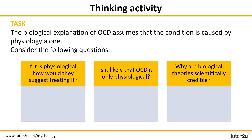So let's put your critical thinking skills to the test. One of the conditions you'll study in psychopathology is OCD, and the biological explanation assumes that the condition is caused by physiology alone. There are three questions to consider on screen, each probing your critical thinking skills: first, if OCD is physiological, how would they suggest treating it? Second, is it likely that OCD is only physiological? And finally, why are biological theories scientifically credible?